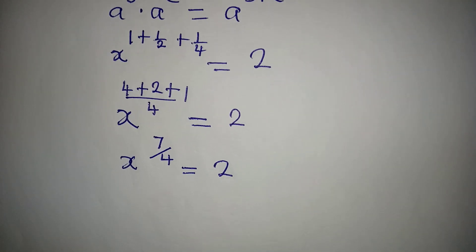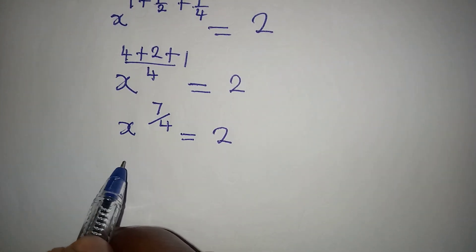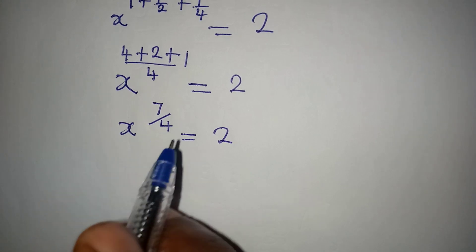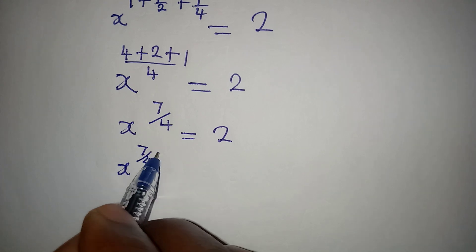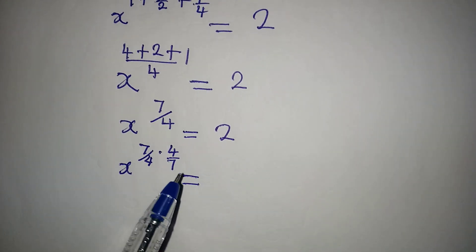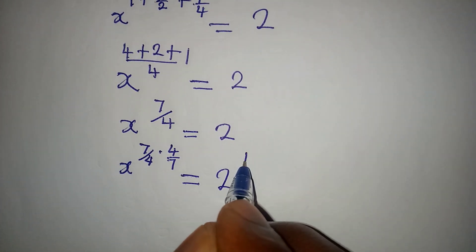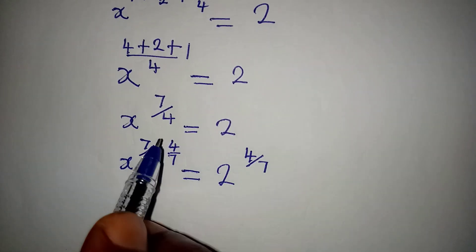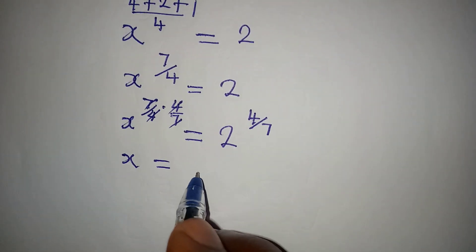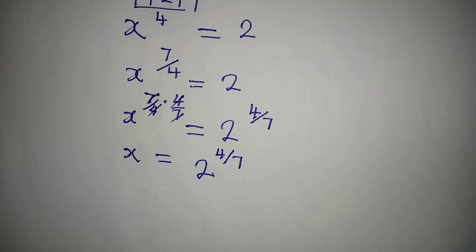We are looking for the value of x, so to make x alone we multiply the power by its reciprocal. We have x to the power of 7/4 multiplied by 4/7, because the reciprocal of 7/4 is 4/7. Introducing the reciprocal must also be reflected on the right side, giving us 2 to the power of 4/7. The 7/4 and 4/7 cancel, leaving x equal to 2 to the power of 4/7.